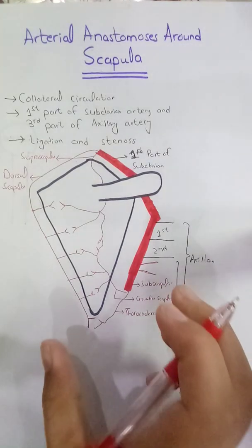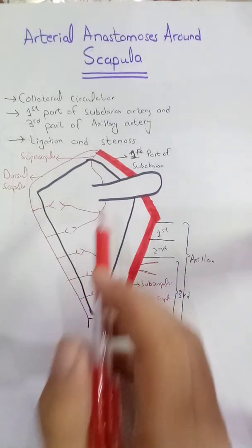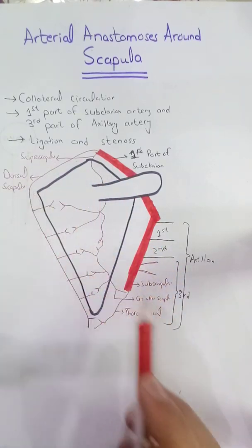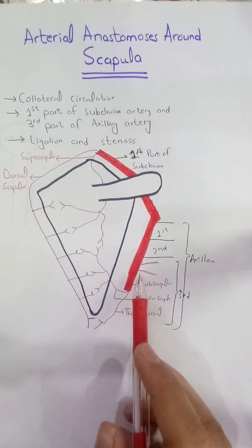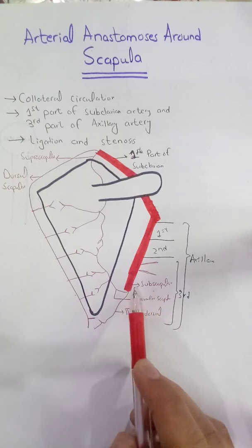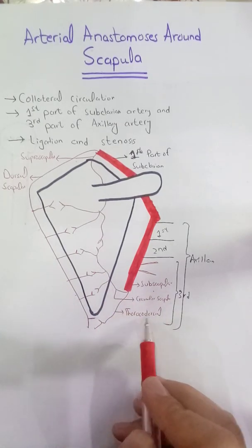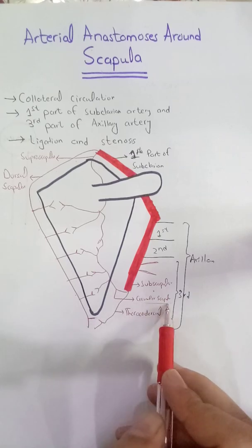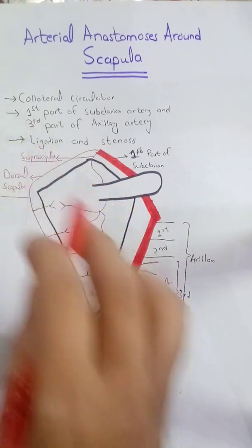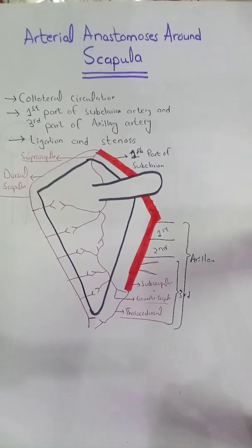So this is the anastomosis around the scapula and the vessels involved in it. We can see that the branches of the subclavian artery are the suprascapular artery and the dorsal scapular artery. The third part of the axillary artery is also involved through its subscapular artery, which divides into the circumflex scapular and the thoracodorsal. These four — the circumflex scapular, the thoracodorsal, the dorsal scapular, and the suprascapular — are actually involved in the arterial anastomosis around the scapula. Thank you.